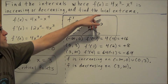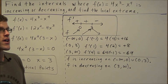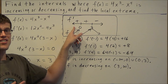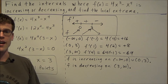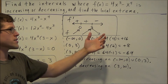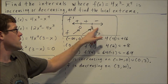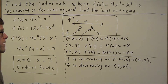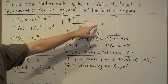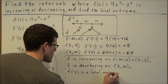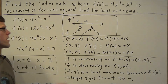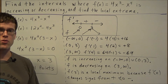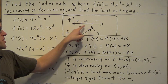For the local extrema: a local minimum requires a sign change from negative to positive, which does not occur, so f does not have a local minimum. A local maximum requires the first derivative to change signs from positive to negative, which happens at x equals 3. So f of 3 is a local maximum. At x equals zero, since there is no sign change, f of zero is neither a local maximum nor a local minimum.